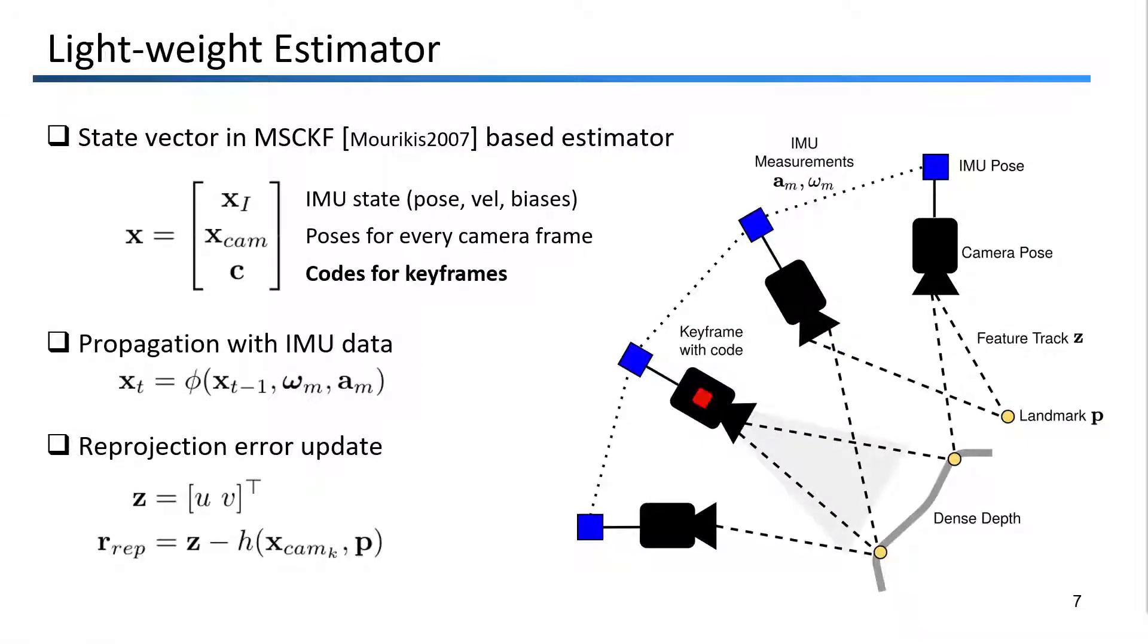Our VIO estimator is based on the Multi-State Constraint Kalman Filter, or MSCKF. The state vector consists of the active IMU state, camera pose clones, and codes for certain keyframes. In the propagation stage, IMU gyroscope and accelerometer measurements drive the filter forward to the current time step T.